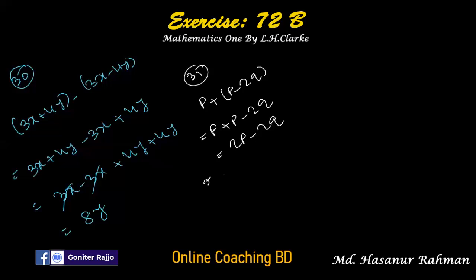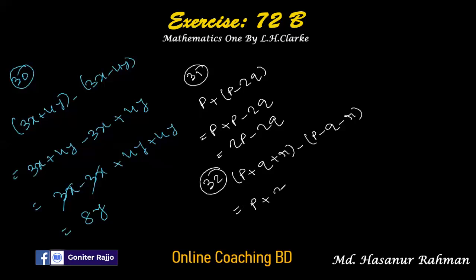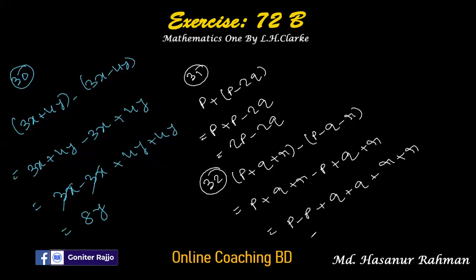Number 32 says p plus q plus r minus p minus q minus r. Removing the bracket: minus into p is minus p, minus into minus q is plus q, minus into minus r is plus r. Rearranging: p minus p plus q plus q plus r plus r. p and p cancel, giving 2q plus 2r.